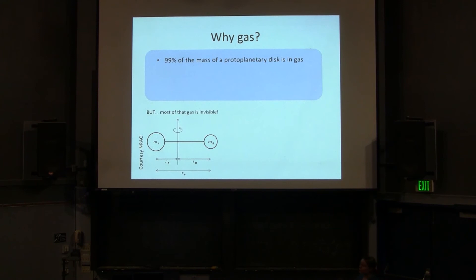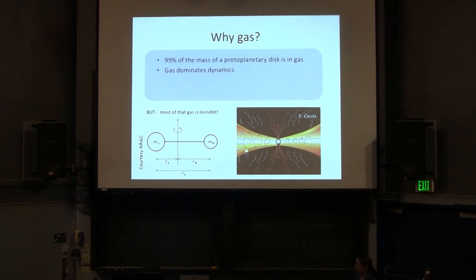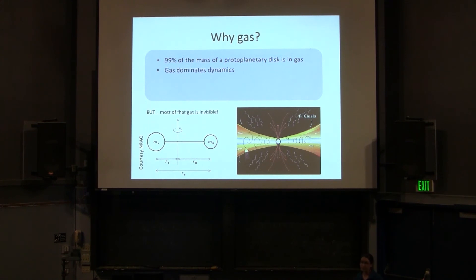Gas is important because it composes so much of the mass of the disk, but unfortunately the vast majority of that gas is invisible to us. So we look at proxies most of the time, and carbon monoxide is our most powerful proxy. Gas also dominates the dynamics of the disk. I'll talk about Keplerian rotation, gas drag, and turbulence — which turns out to be extremely important for the formation of planets.